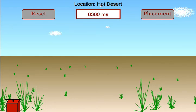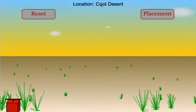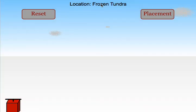To change location, students just need to click on the location. It will switch from the desert during the day, which is pretty hot, to the desert at sunset, which is much cooler, to an area where it is much colder. Hopefully, students will be able to get three different speeds of sound at these three different locations.